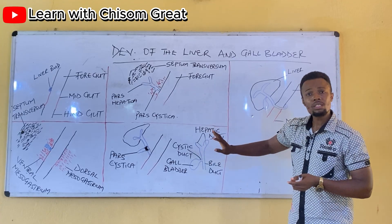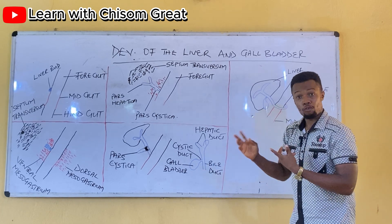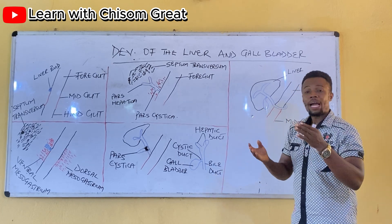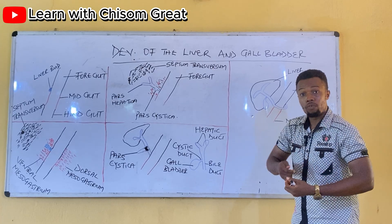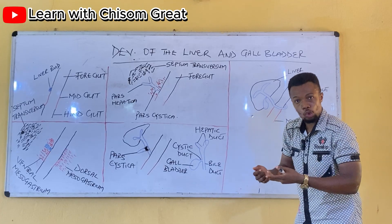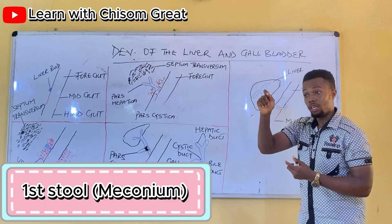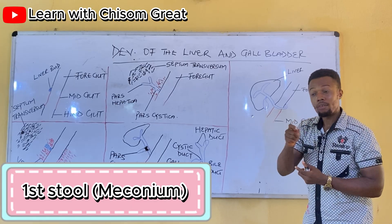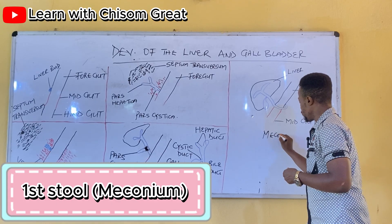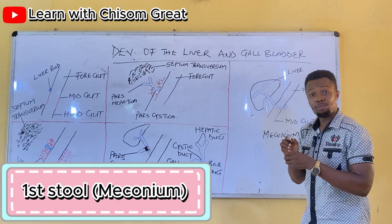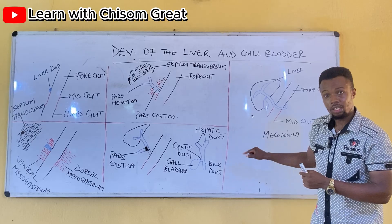The fetal liver helps in hemopoiesis and also production of bile. By the third month, the liver must have developed to the extent that it is capable of producing bile on its own. If you notice, the first stool of a newborn is normally black, and that stool is called meconium.